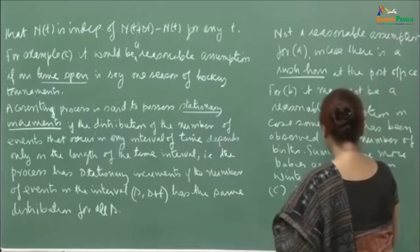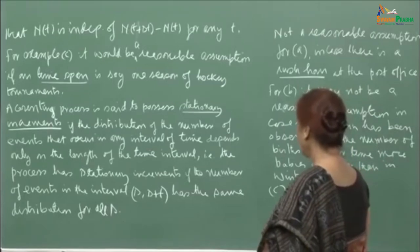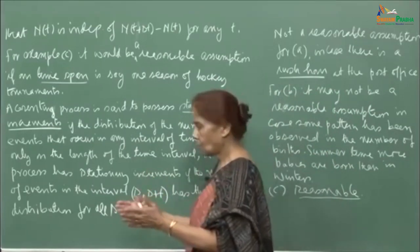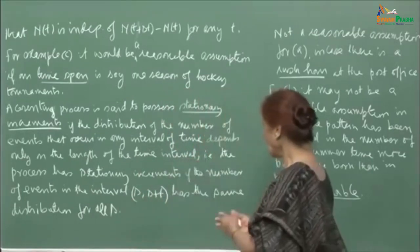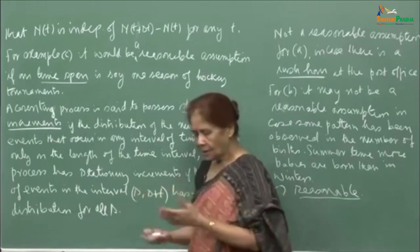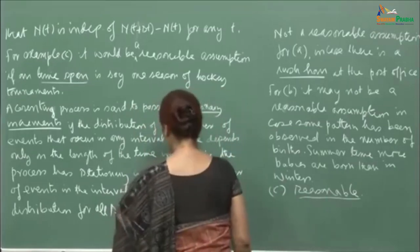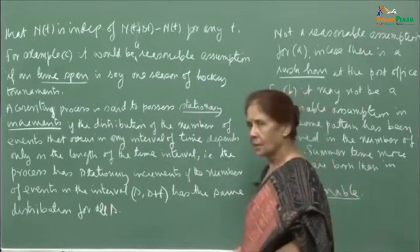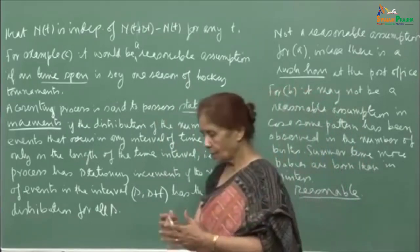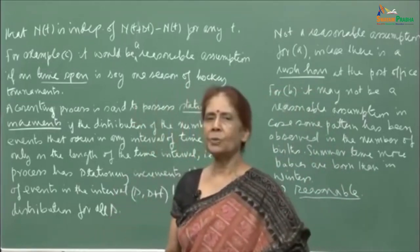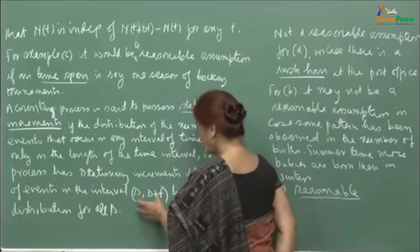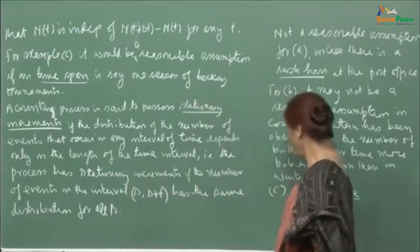For example (c), the hockey player, stationary increments is reasonable. If the player is in form, then the number of goals he hits will depend on the length of time he has played. The distribution of the number of goals would be dependent on the length of the interval and not on when he plays — as long as we restrict ourselves to one or two seasons. So the stationarity increment assumption is reasonable for (c).